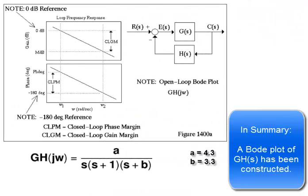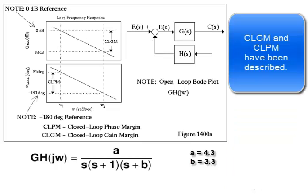In summary, a Bode plot of g h has been constructed, and closed-loop gain margin and closed-loop phase margin have been described.